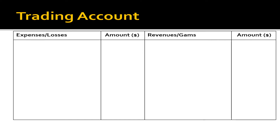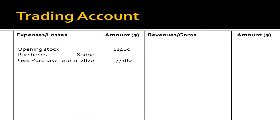We'll start with the trading account. On the debit side: opening stock $11,460; purchases $80,000 less purchase returns $2,820, giving net purchases of $77,180; carriage inwards $2,310; and wages $6,280.